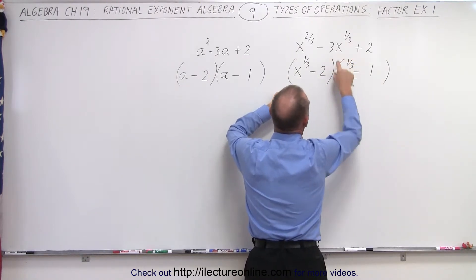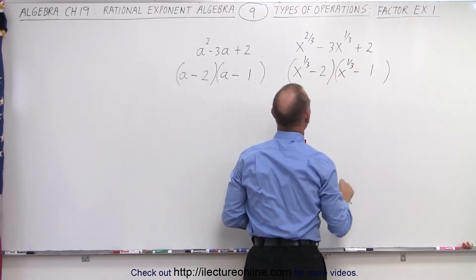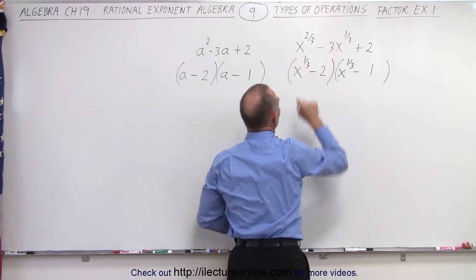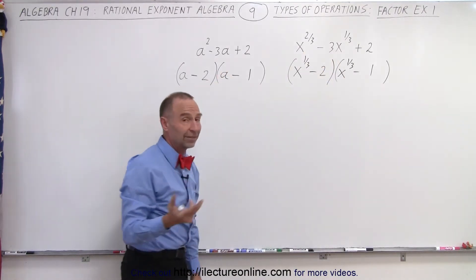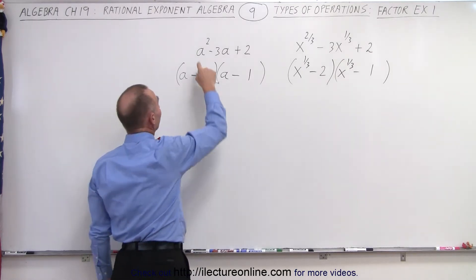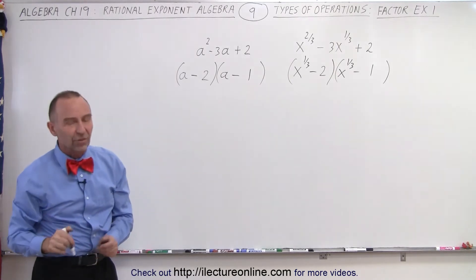Notice that the middle term will contain negative 1 times this and negative 2 times this. So you get the x to the 1/3 term. And this times this gives you x to the 2/3. It looks just like it does over here, except here we have a squared and here we have x to the 2/3 power. But it factors exactly the same.